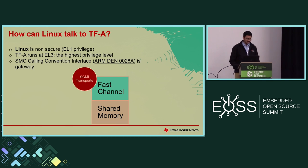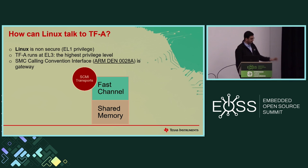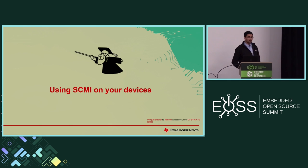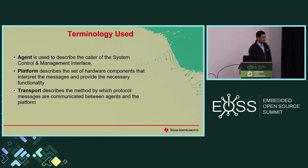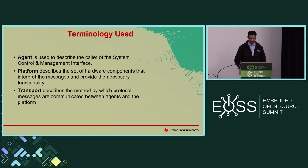How can Linux really talk to TFA? Linux runs in the non-secure EL1 privilege, but TFA runs at EL3, the highest privilege level. This is where the concept of SMC comes in — SMC is another ARM-specific concept. You can refer to the ARM SMC calling convention document. We have two different SMC transports: fast channel and shared memory. Today I'll mainly be covering the shared memory approach. The terminology I'll use: agent describes the caller of the SCMI interface (e.g., Linux), platform is the set of hardware components that interpret messages and provide functionality, and transport is the method by which messages are delivered.